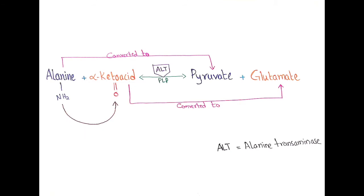Another example of a non-essential amino acid synthesized by transamination is alanine, which can be synthesized from pyruvate and glutamate by the enzyme alanine transaminase. This is the mechanism of transamination with examples catalyzed by ALT and AST, and these two enzymes catalyze reversible reactions.